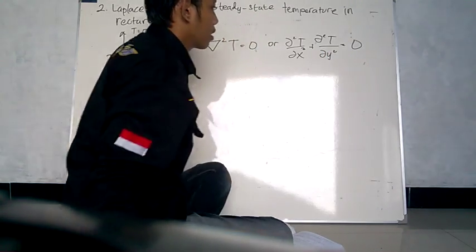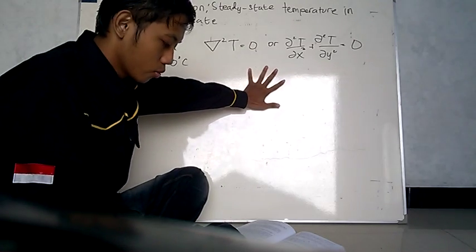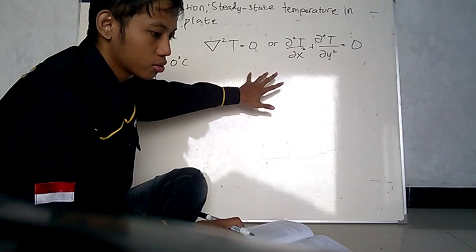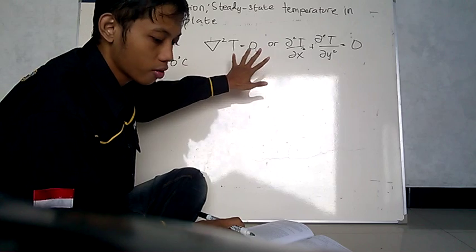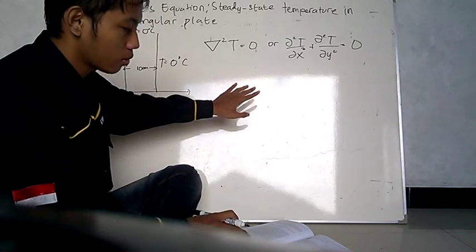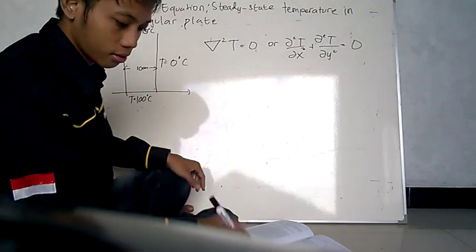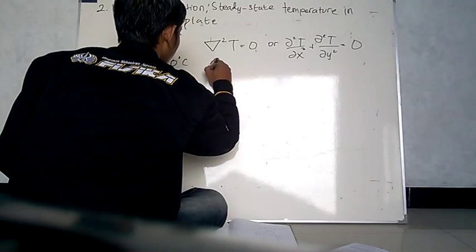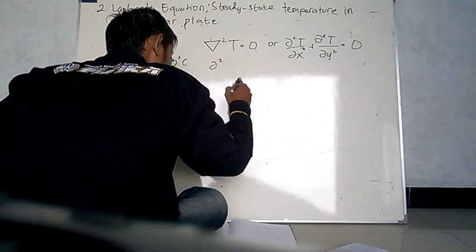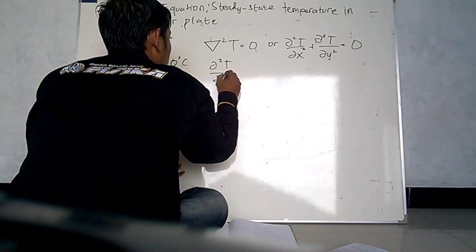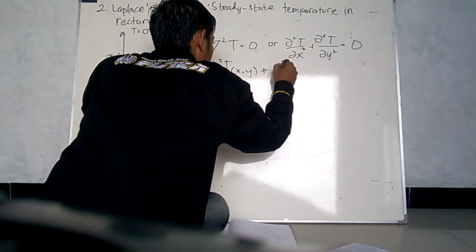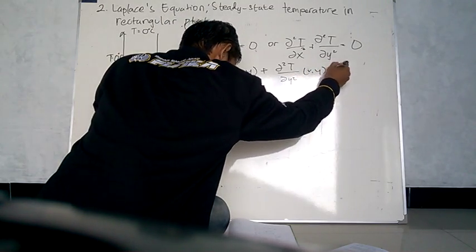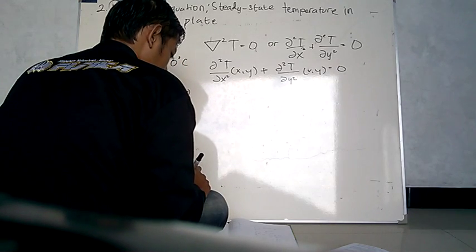is equal to 0. So in this equation we can solve using separation of variables. Then we can read: del squared T per del X squared equal to X, and plus del squared T per del Y squared is 0.